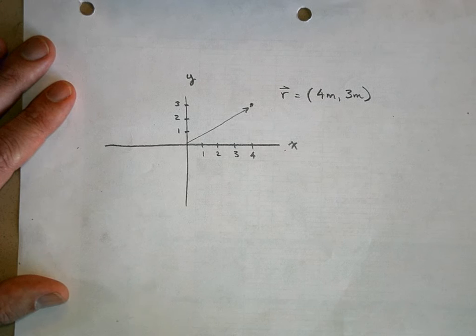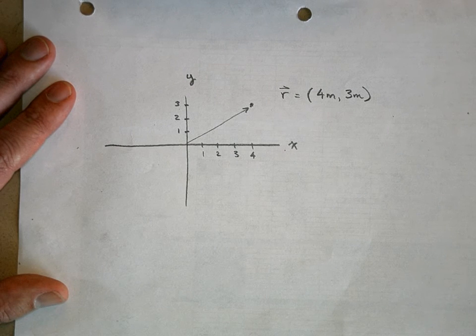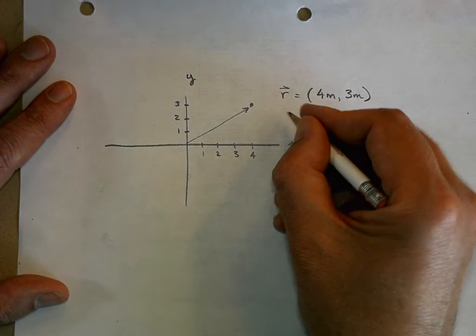That is vector r is equal to four meters in the x direction and three meters in the y direction. Well, what if I want to express vector r in terms of polar coordinates? Well, the magnitude is easy.